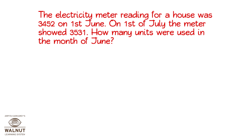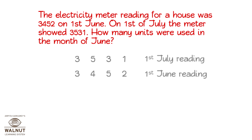The electricity meter reading for a house was 3,452 on 1st June. On 1st of July, the meter showed 3,531. How many units were used in the month of June? We have to find out the units used in June. We know the reading on the 1st of June and on the 1st of July. The reading of 1st of July is more than that of 1st of June. The extra reading is because electricity was used during the month of June. We can get how much electricity was used by finding the difference between the readings.